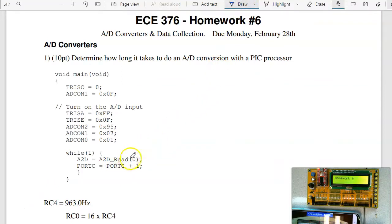So what I'm going to do is count on port C. That's going to make port C go high, low, high, low. The time in the middle is going to be however long this takes, my A to D read.